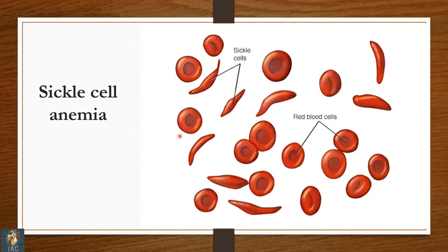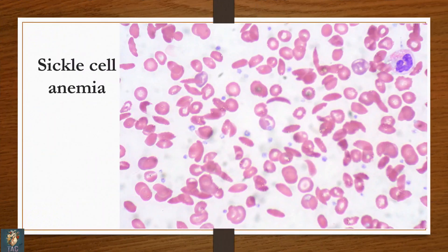This is an illustrative slide of sickle cell anemia showing you the difference between normal RBCs and sickle-shaped RBCs. In the next slide you can see sickled RBCs alongside normal RBCs. The diagnosis is sickle cell anemia; you can appreciate the sickled RBCs easily on this slide.